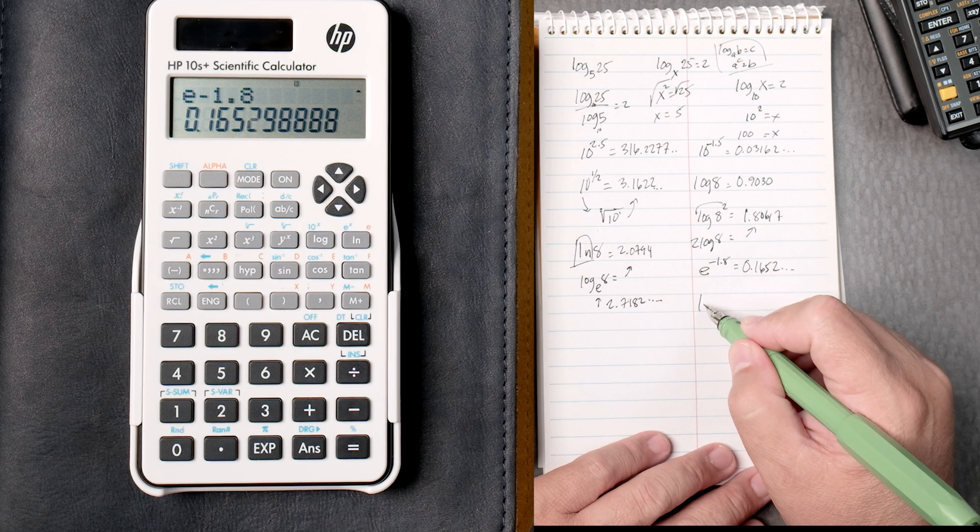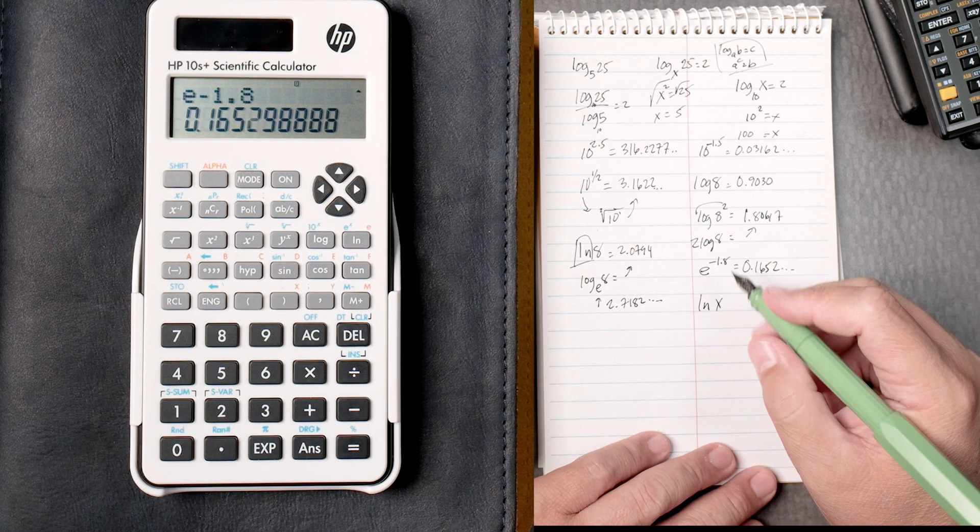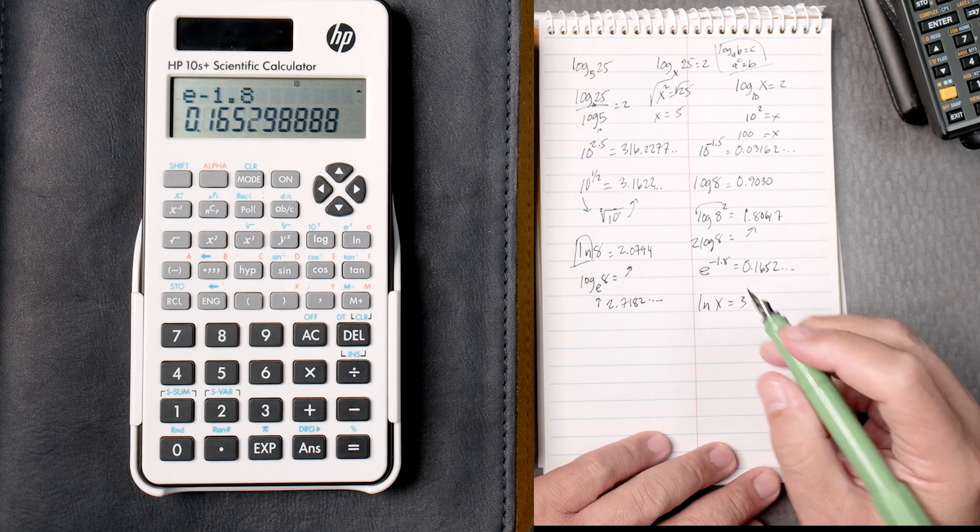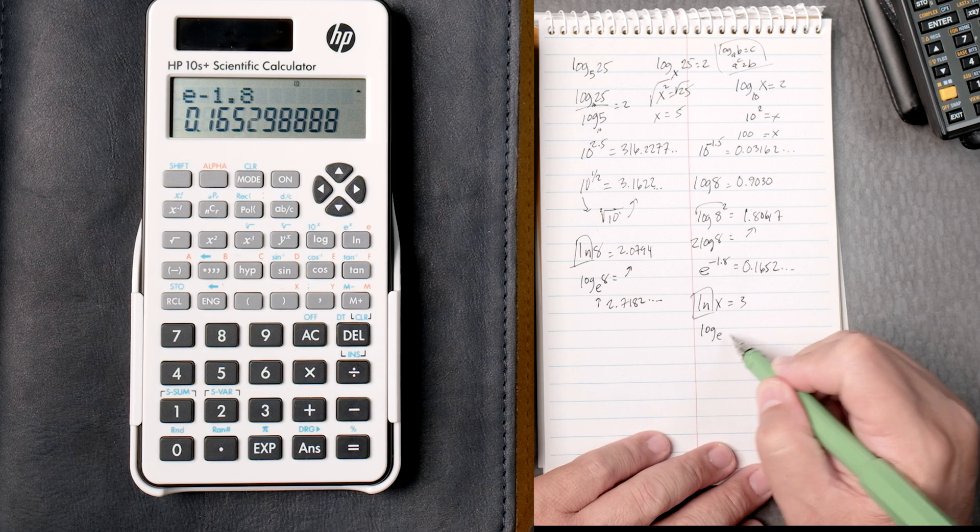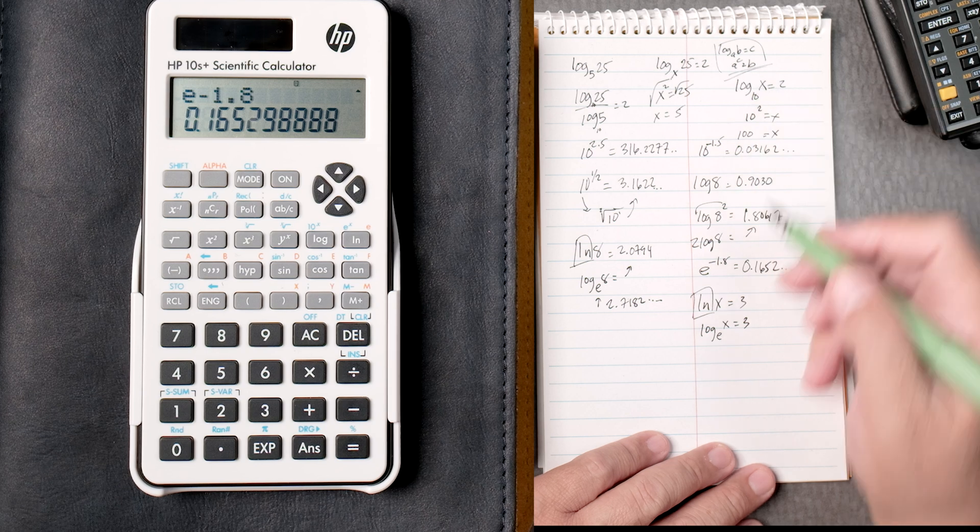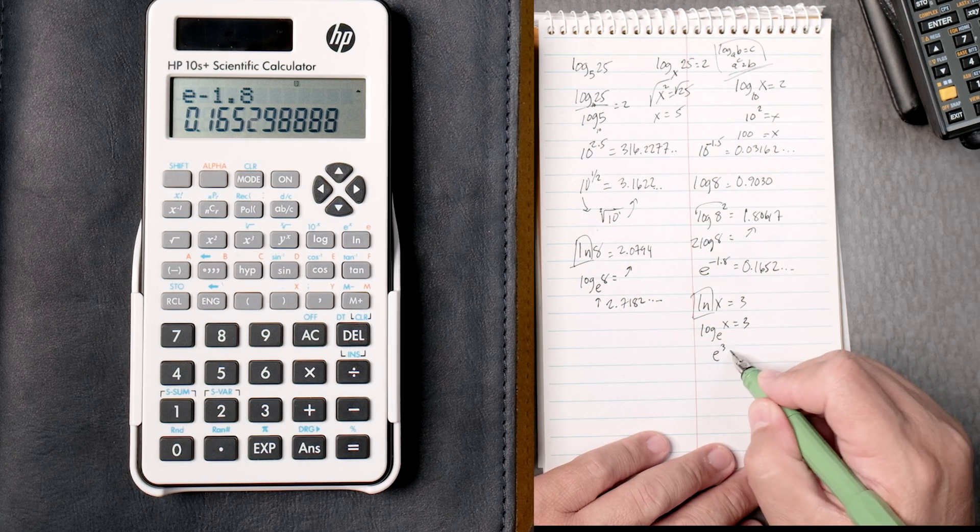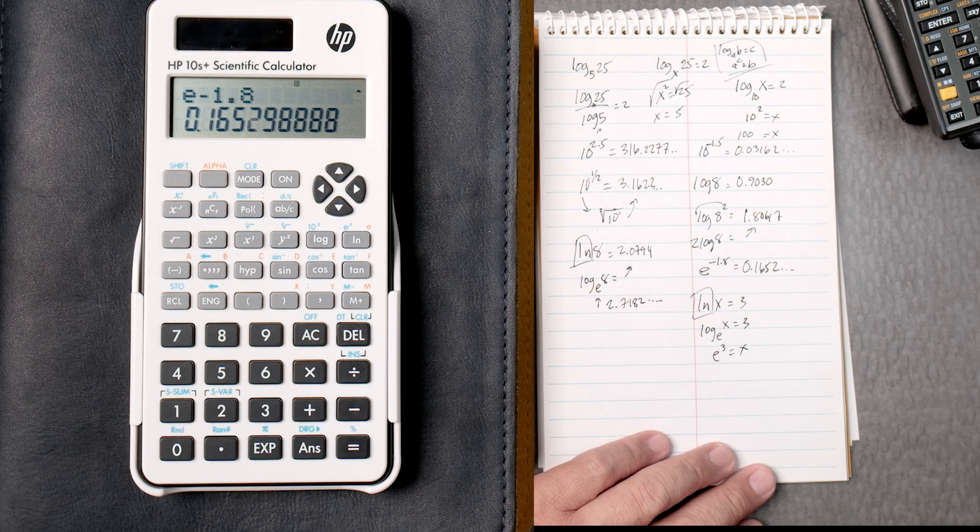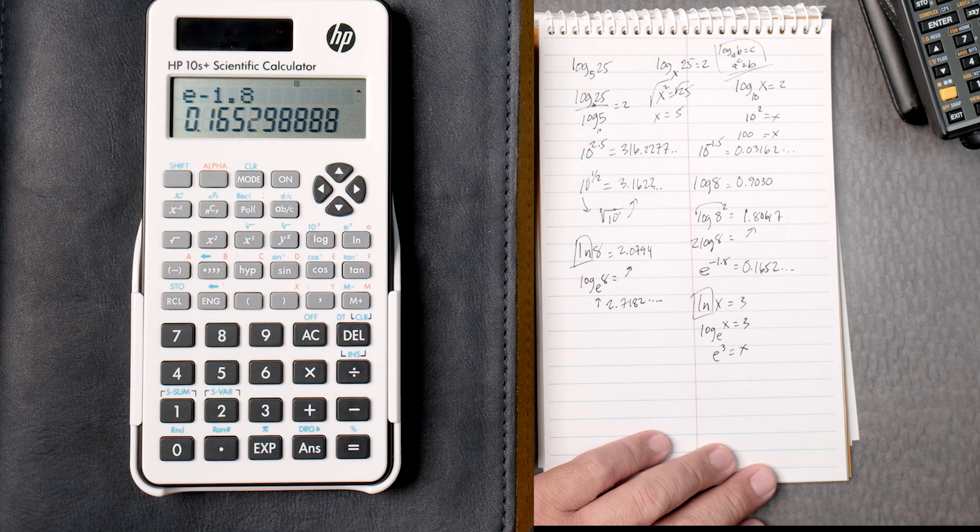And lastly, let's say you got the natural log of X equals 3. Remember, natural log is the log of E, X equals 3. And then with the rule, E to the third equals X, we can find what X is.